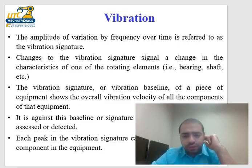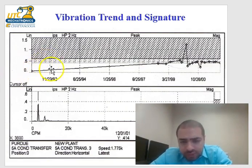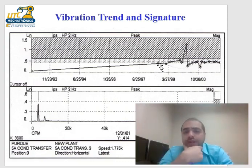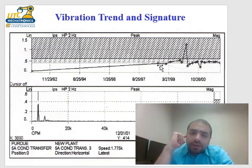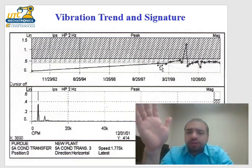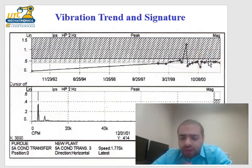A change in the vibration signature indicates a change in the characteristics of one of the rotating elements. Mechanical problems do not resolve by themselves — if you detect a problem and don't fix it, it will never improve on its own; it will either stay the same or get worse. That's why if you detect vibrations you have to take corrective action soon, or it will continue to deteriorate.